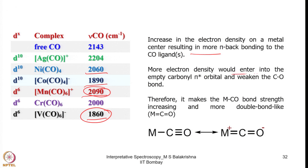More electron density enters into the pi star orbital, weakening the C≡O bond and therefore strengthening the M–CO bond, giving it more double bond character, with stretching frequency approaching that of ketone or aldehyde carbonyls as seen in organic chemistry.